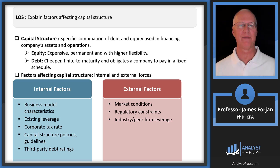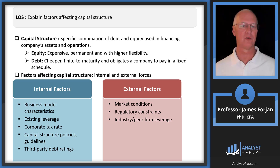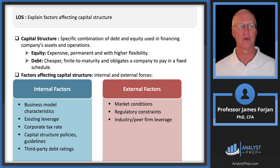Capital structure is defined as the specific combination of debt and equity used to finance the company's assets. If we want to issue shares of stock, we're asking other investors to become owners or at least part owners in the company. It's expensive — the cost of equity is the highest cost of any source of capital. It's permanent in the sense that when a company issues shares of stock, there is no maturity date. You can own a share of stock for the rest of your life and will those shares to your children and grandchildren. As long as the company exists, those shares will exist.